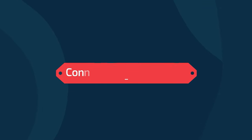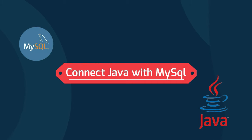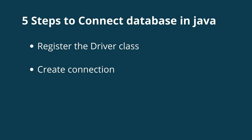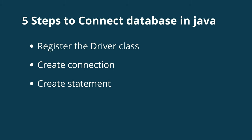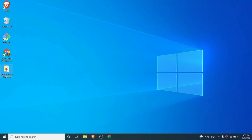Hey guys, welcome back to another video. In this video I'm going to show you how to connect a Java application with MySQL database using JDBC. For that we need to follow five steps: the first step is to register the driver class, the second step is to create the connection object, the third step is to create the statement object, the fourth step is to execute the query, and the last step is to close the connection. We also need to add the JAR file.